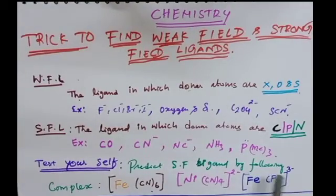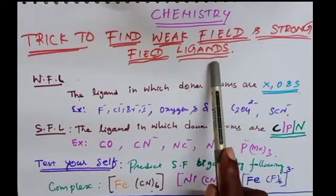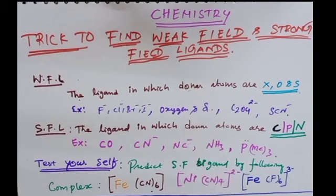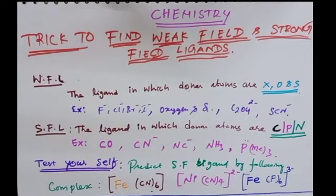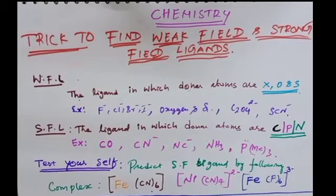Hi students, now we are going to see a trick to find weak field ligands and strong field ligands. Before seeing this, first we have to know what is a ligand. The ligand in which the donor atom donates the electron to the central metal atom in a complex — simply, the atom which donates the electron to the central metal atom — is called a ligand. Ligands are classified as strong field ligands and weak field ligands.